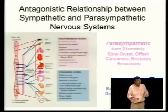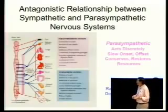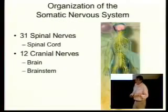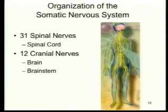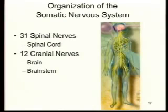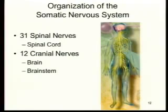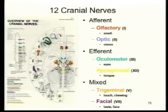Remember, if you have questions about lectures or reading, you can always post them to the course website. Now let's look at the somatic nervous system, which consists of the nerves that run to and from the brain and spinal cord. There are 31 spinal nerves, so-called because they emanate from the spinal cord. And then there are 12 cranial nerves, so-called because they emanate from the brain or brainstem. Here is the vagus nerve, which comes out of the brainstem and goes into the trunk of the body.